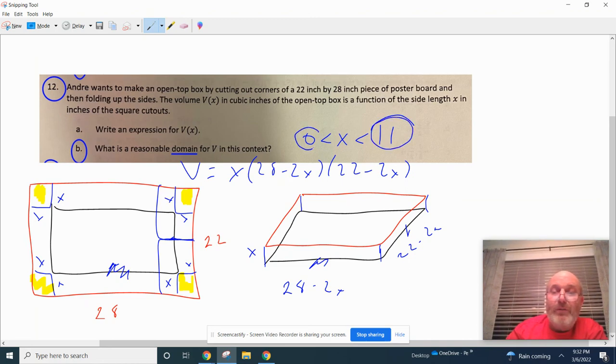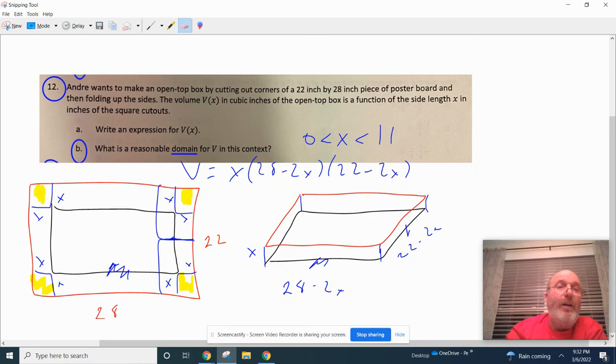This number is always going to be half your shortest side, this number is always going to be 0. We do these domain problems for this open top box, that's how you do number 12.